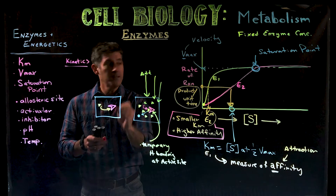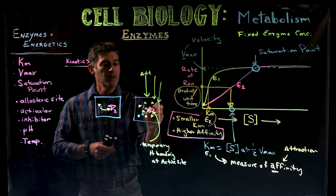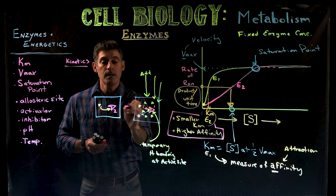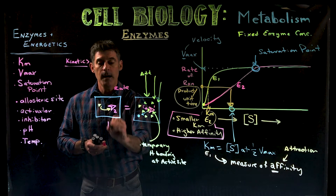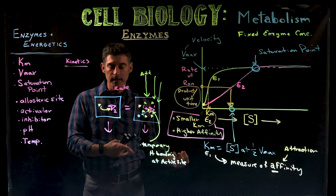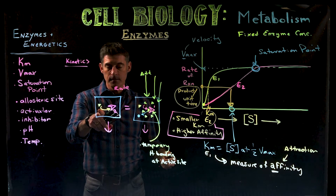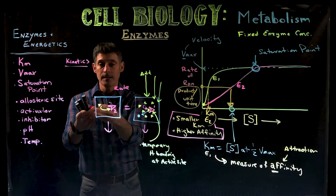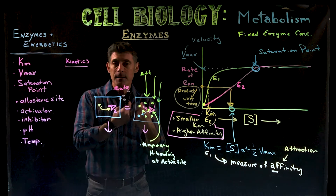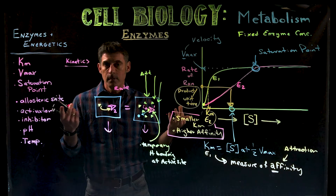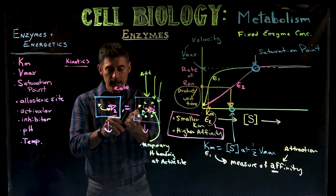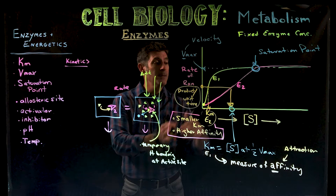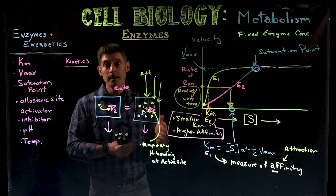If it doesn't take much substrate to still go at the same speed, that means the enzyme is more attracted to the substrate molecule. The other enzyme might barely recognize the substrate when they bump into each other — it has to fit just right at the active site for the reaction to occur. Some enzymes have very low Km values and some have very high Km values.